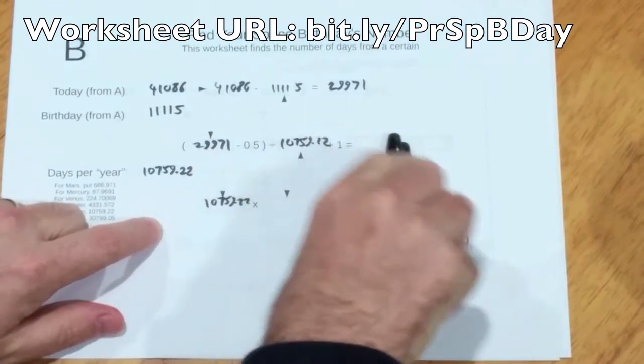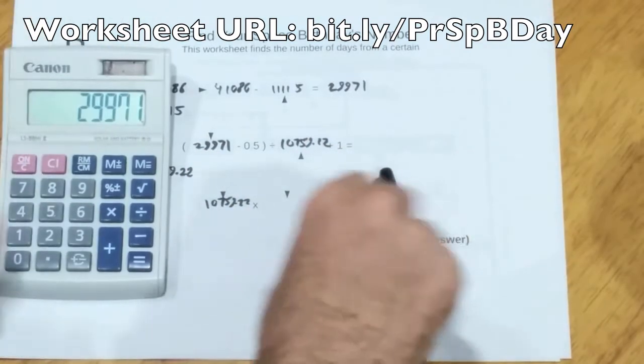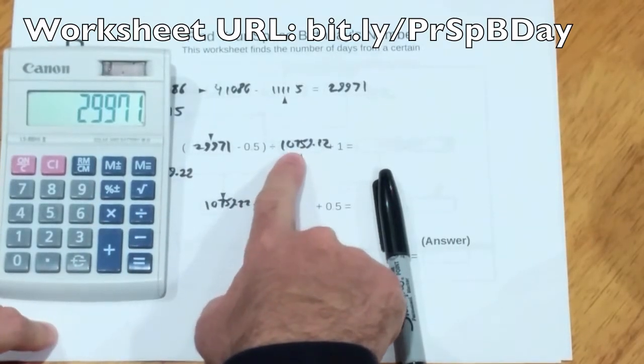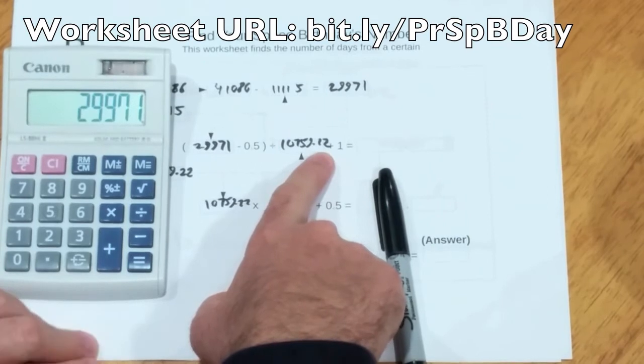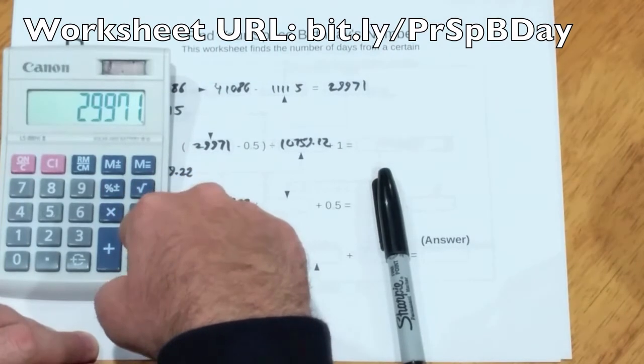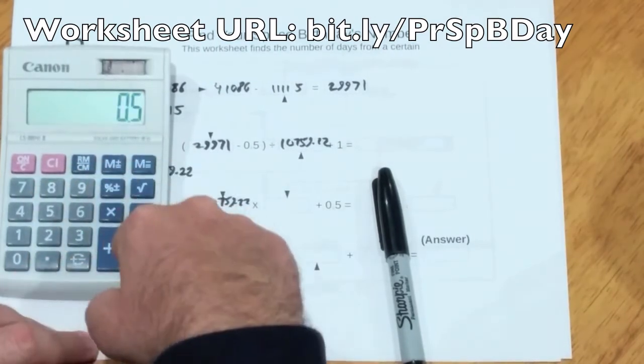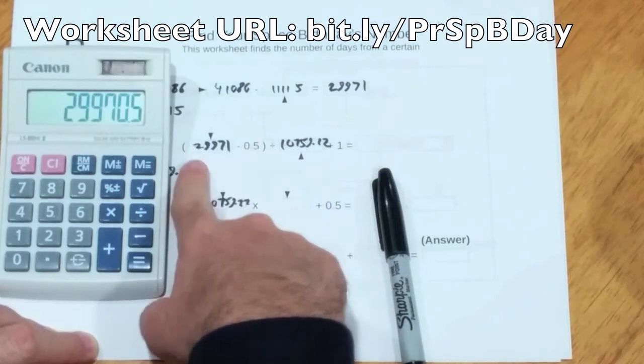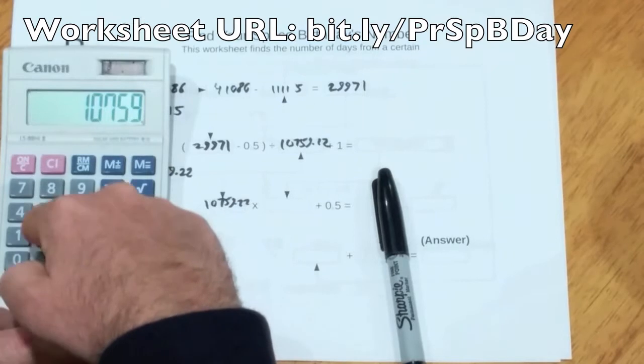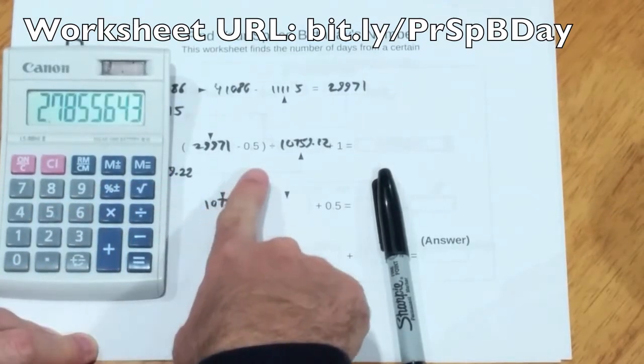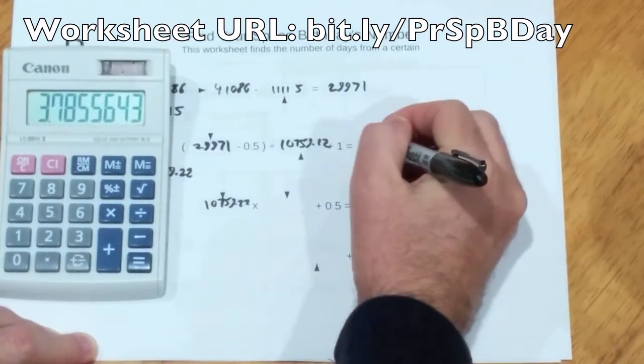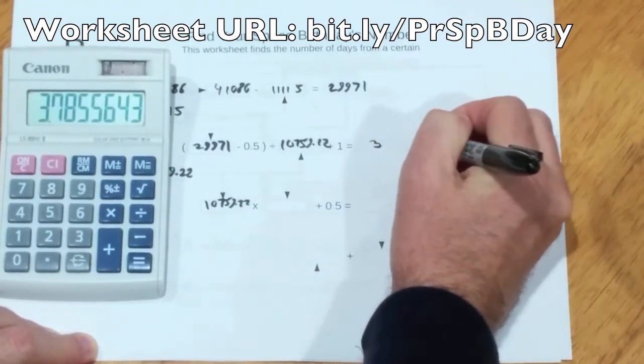This is where you really do need to break out the calculator, even if you didn't before. Unless you really want to divide by 10759.22 in your head. Let's work this out on the calculator. So, 29971 subtract 0.5, that's in brackets, so I do that first. Then we'll divide by 10759.22. Add 1.